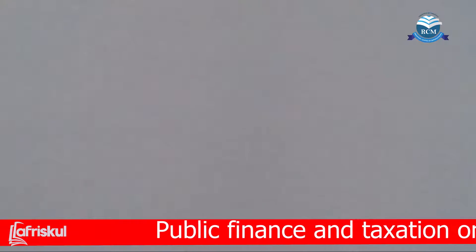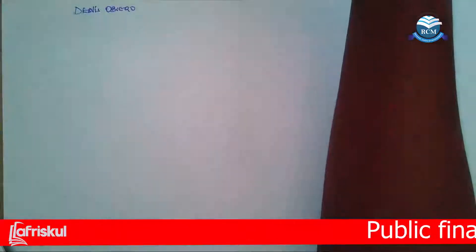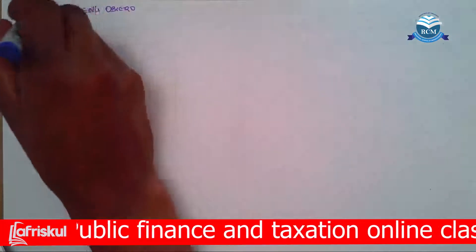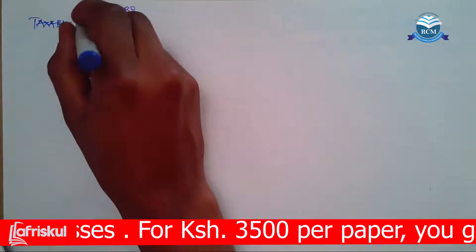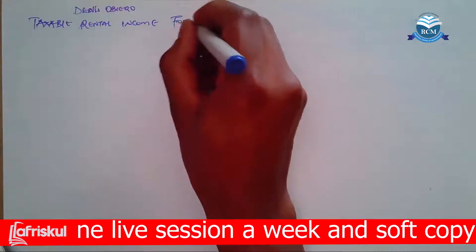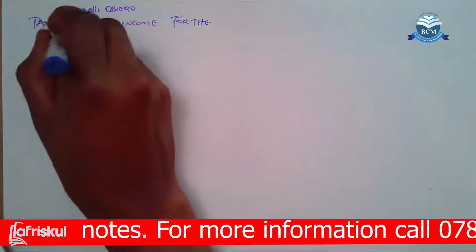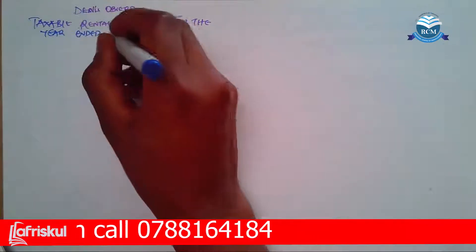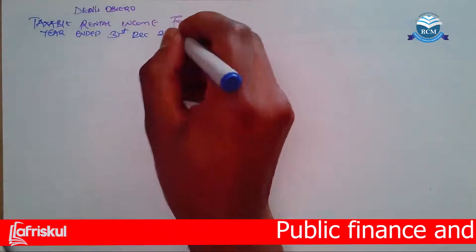If you come across such a question in an exam, this is how you're supposed to tackle it. I'm going to start by tackling the taxable rental income, beginning with writing the title: Rental Income for the Year Ended 31st December 2012.